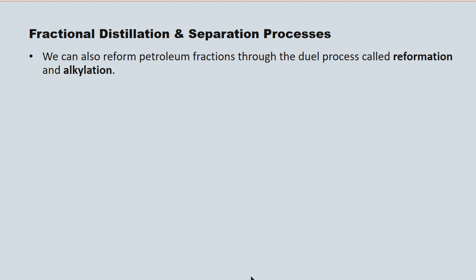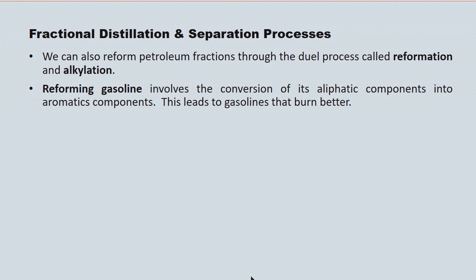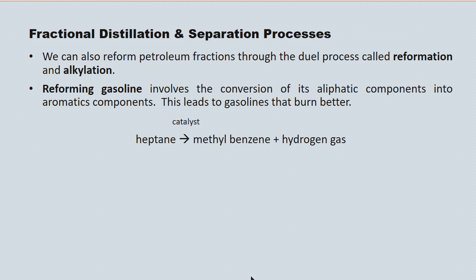We can also reform petroleum fractions through a process called reformation and alkylation. Reforming gasoline involves the conversion of aliphatic components into aromatic components, leading to gasoline that burns much better. It's a catalytic process — here we see heptane being converted to methyl benzene plus hydrogen gas, with methyl benzene having more desirable combustion properties.